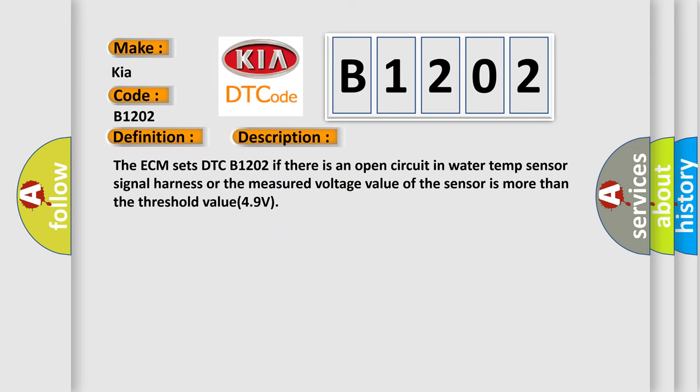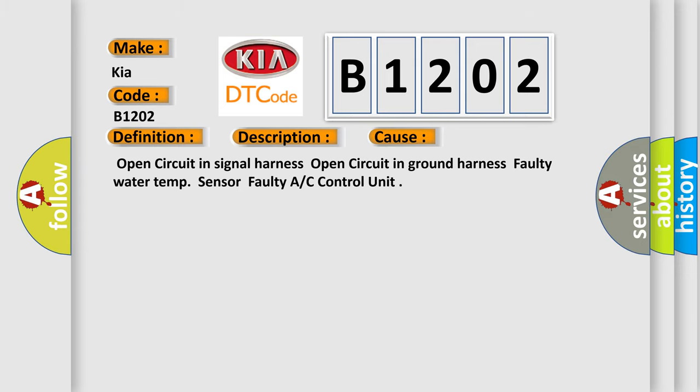The ECM sets DTC B1202 if there is an open circuit in water temp sensor signal harness or the measured voltage value of the sensor is more than the threshold value 49 volts. This diagnostic error occurs most often in these cases: Open circuit in signal harness, Open circuit in ground harness, Faulty water temp sensor, Faulty A/C control unit.